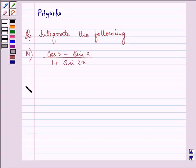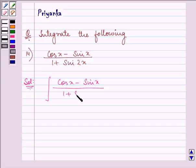Hello and how are you all today? Let us integrate the following function which is given to us here. The function is cos x minus sin x divided by 1 plus sin 2x with respect to dx.